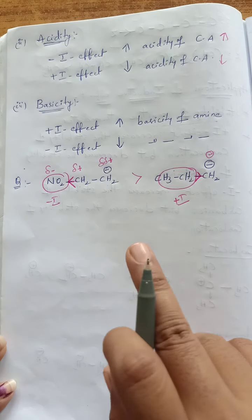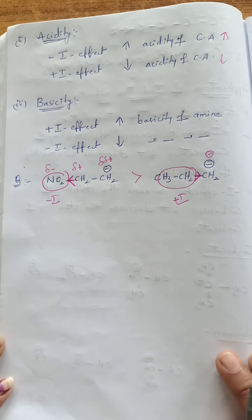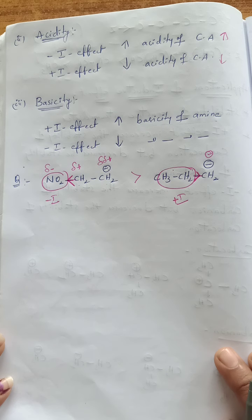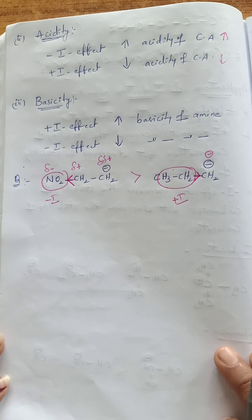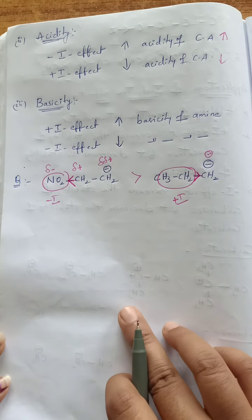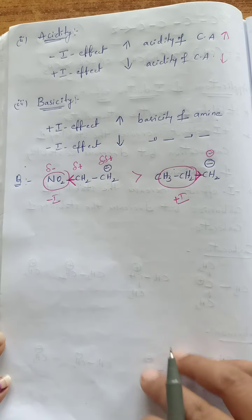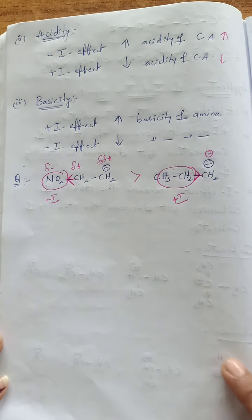Remember: inductive effect is a permanent effect, electromeric effect is a temporary effect. Electromeric effect deals with pi electrons, inductive effect deals with sigma bonded electrons — a very important concept. If you have any doubt, pause the video and revise. Thank you.